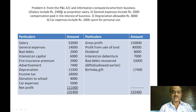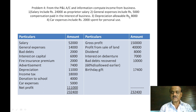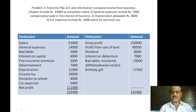Proprietor's salary is disallowable. General expenses include Rs.5,000 compensation in the interest of business — this is allowable. Depreciation charged is Rs.7,000 but allowable is Rs.8,000, so Rs.1,000 extra depreciation is deductible. Car expenses Rs.2,000 for personal use is disallowable.